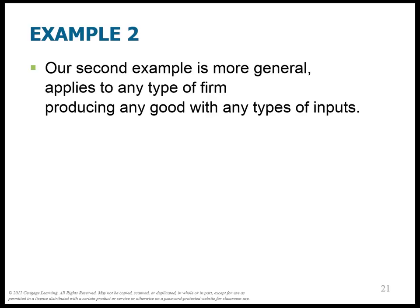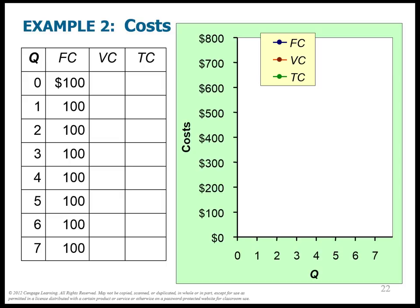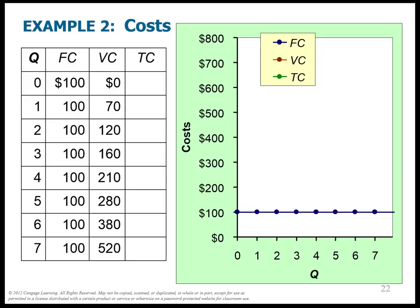Let's do a general example that applies to any type of firm. Let's say the fixed cost is 100, no matter what quantity they produce. Along the entire quantity axis, there is a cost of 100, so it's a flat line. Variable costs, however, are going up — if we want to make one unit of output, it costs $70 of labor; if we want to make two units, it costs $120 of labor. This is always increasing just because we're having to hire more workers and perhaps more raw materials. The variable cost curve increases.